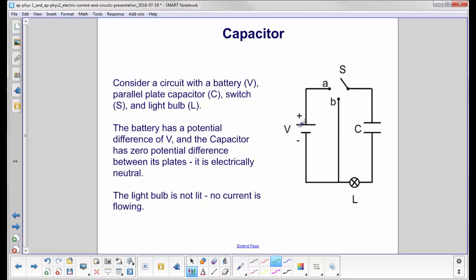There's a voltage difference here. There's a potential for the battery. And here's a light bulb. The capacitor has no charge on it. It is electrically neutral. No potential difference. The light bulb is not lit. No current is flowing.